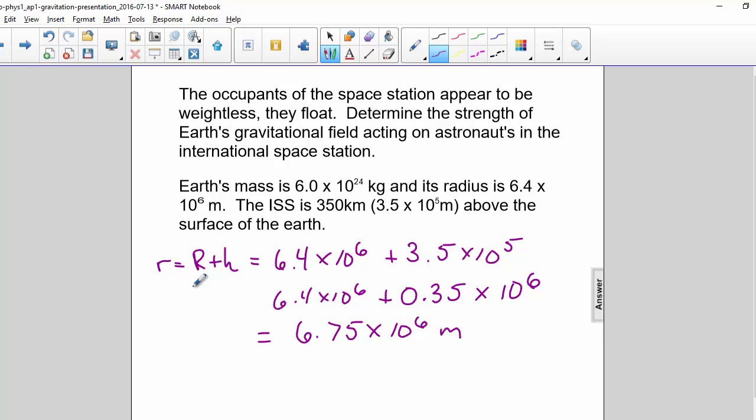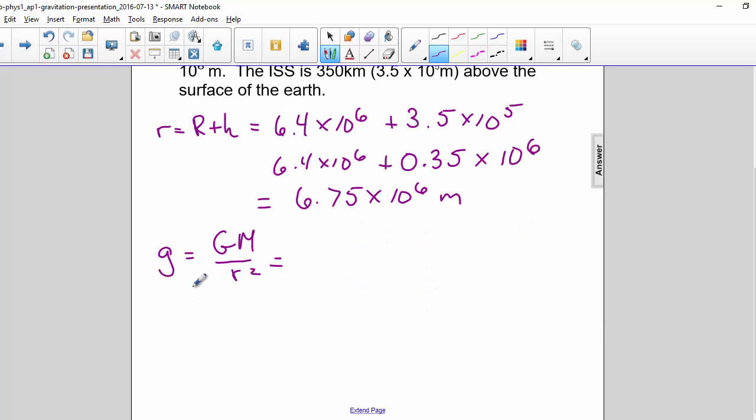Now we can put it into our equation. G equals GM over R squared. G is 6.67 times 10 to the negative 11th.